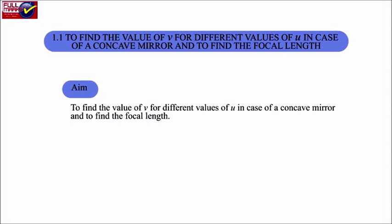Experiment 1.1 Aim: To find the value of V for different values of U in case of a concave mirror and to find the focal length.